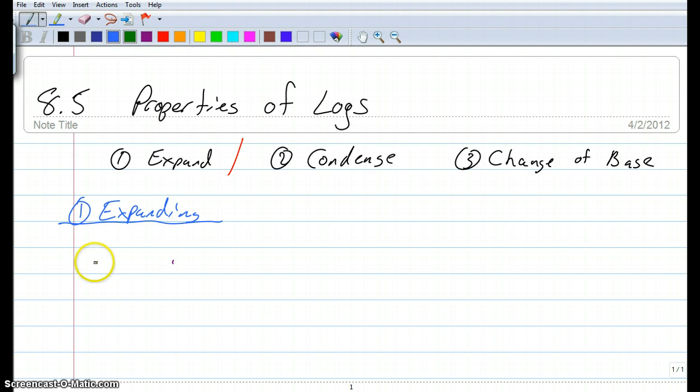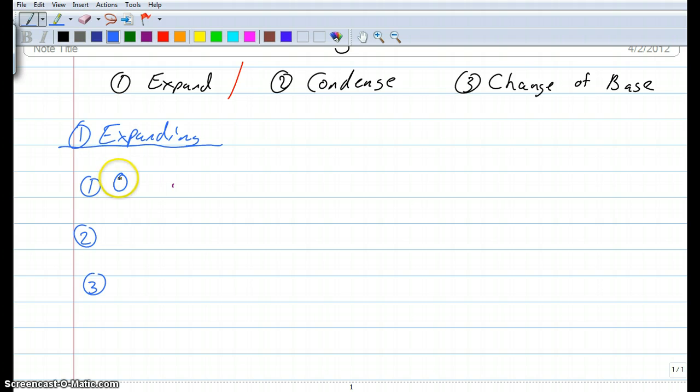So let's start off with expanding. When we're expanding logs, log statements, there's three properties that are associated with that: one, two, and three. The first property is called the quotient property. And then we've got the product property. And the last one is power property. There's three properties.